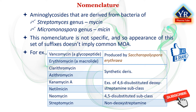In the following gallery, kanamycin A through netilmycin are examples of the 4,6-disubstituted deoxystreptamine subclass of aminoglycosides. The neomycins are examples of the 4,5-disubstituted subclass, and streptomycin is an example of a non-deoxystreptamine aminoglycoside.